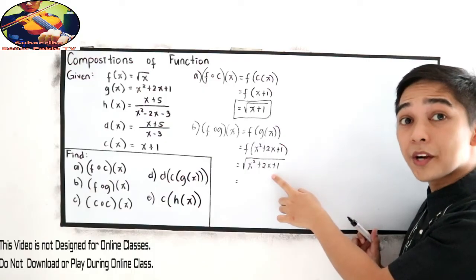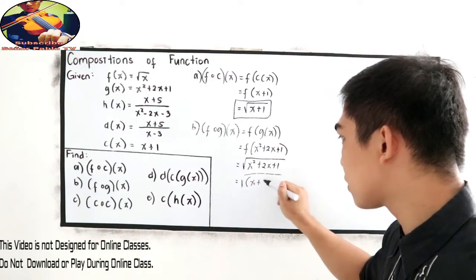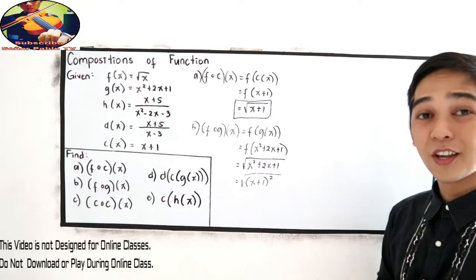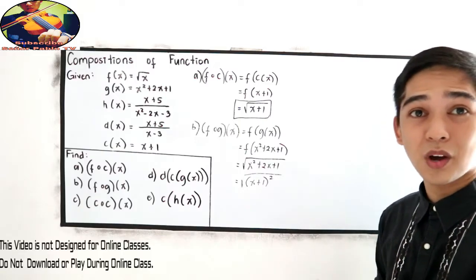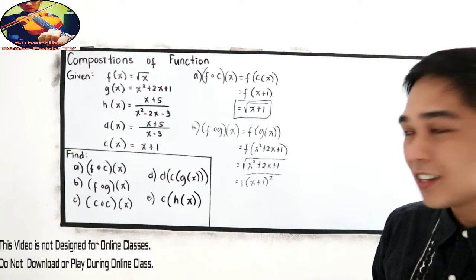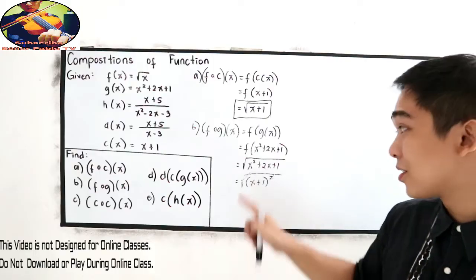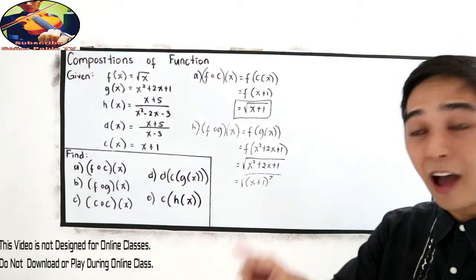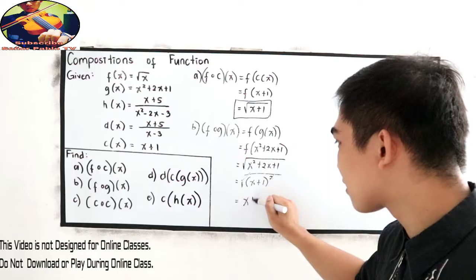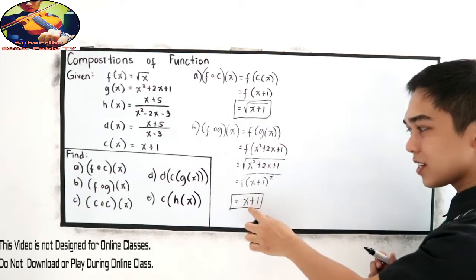Study the expression. That is a perfect square trinomial. And the equivalent of this expression is x plus 1 raised to 2. If you want to recall the perfect square trinomial, please go to our grade 8 playlist. Now, in your grade 9 lesson, if you have a square root and a square, we can cancel that. Because the square root is equivalent to 1 half. So 1 half times 2, that is 1. Now, for our final answer is x plus 1.